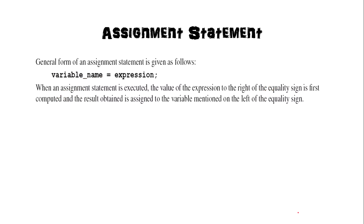Next, the assignment statement: variable_name = expression. In this statement, you may or may not use the semicolon. If you use the semicolon, the output echo is suppressed in the command window. If you do not use the semicolon, the output is displayed. The expression on the right-hand side of the equal sign is evaluated first, then assigned to the variable — it is not processed left to right.